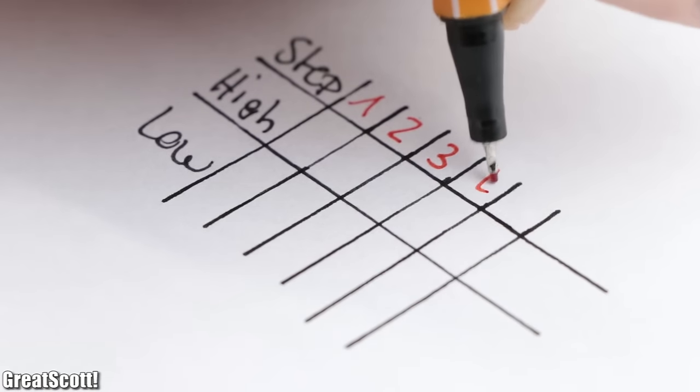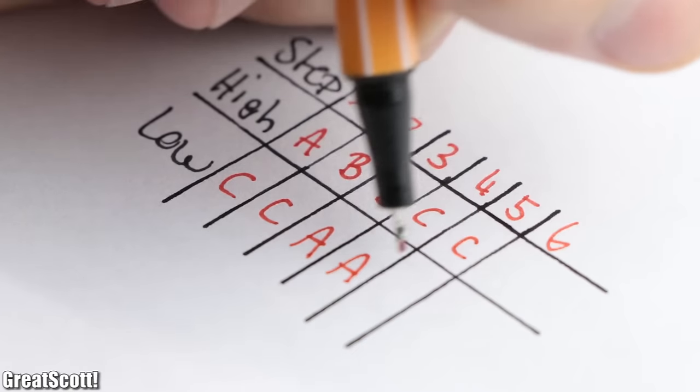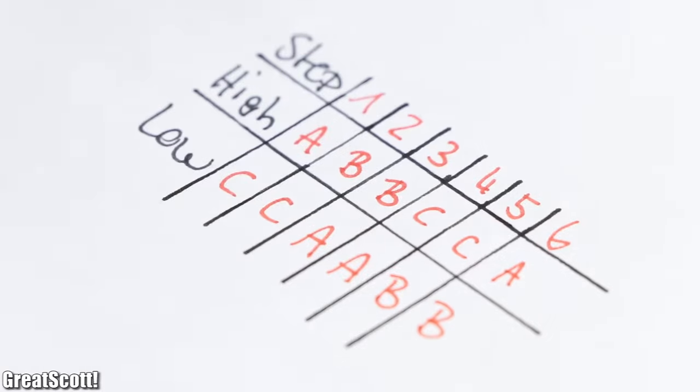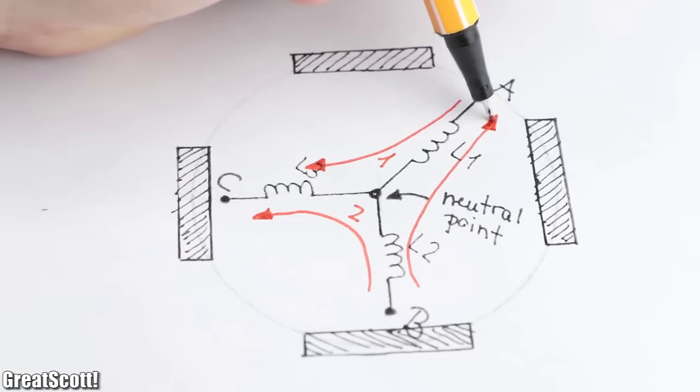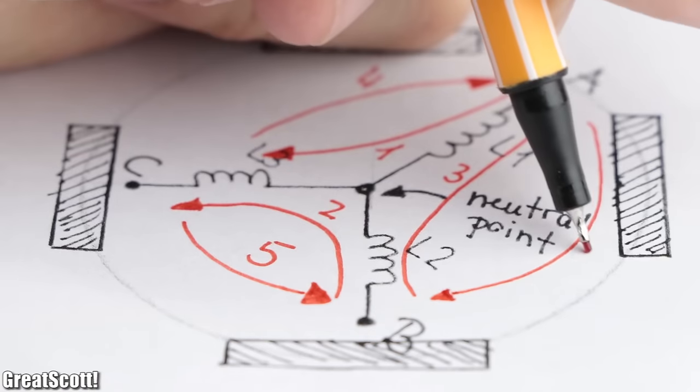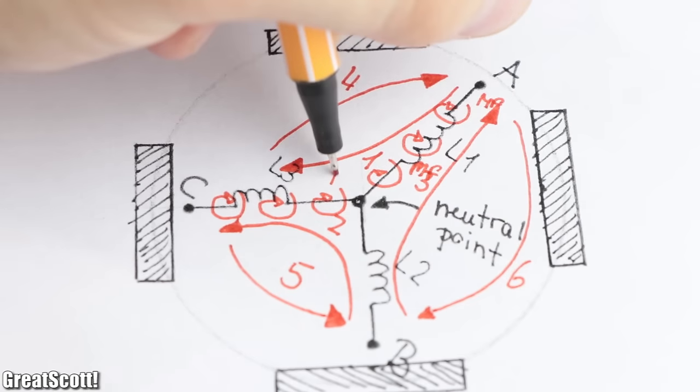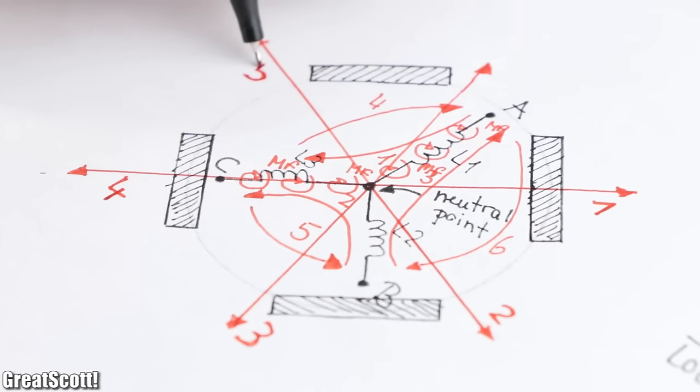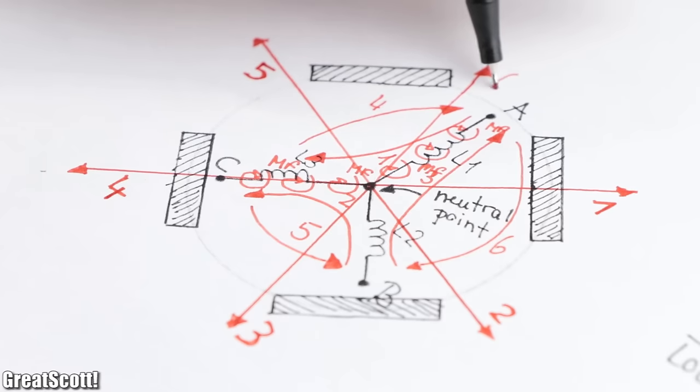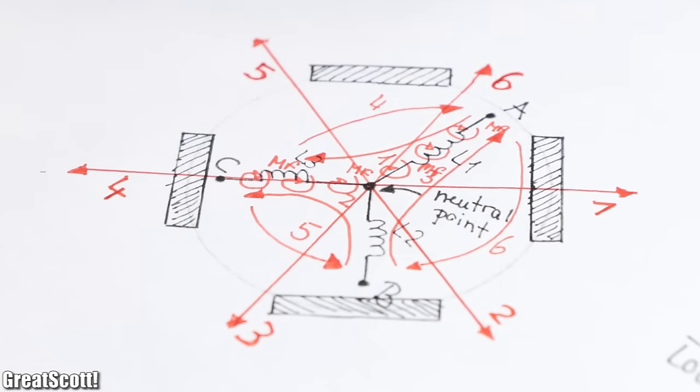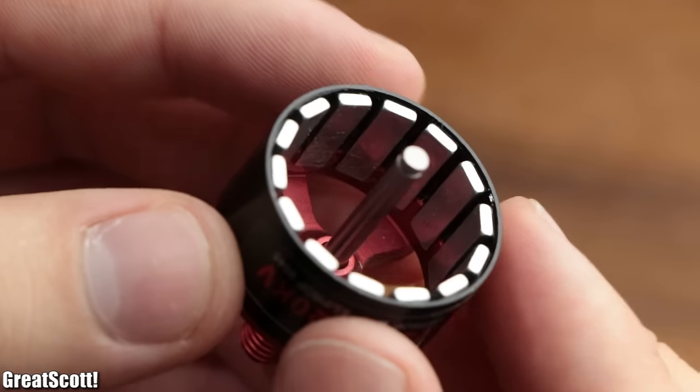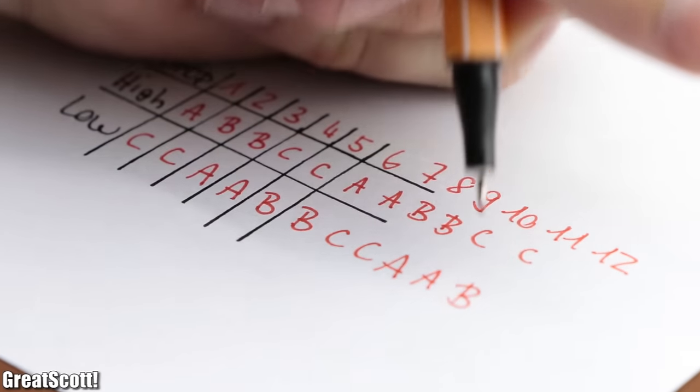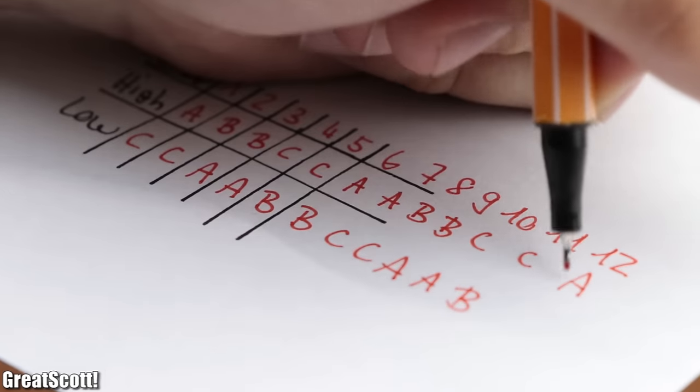So what the ESC basically does is going through six steps in which one of the three phases is connected to the supply voltage and one to ground. That means that in each step, current flows through two coils, each time with a different direction, which thus creates a changing magnetic field which attracts the magnets of the rotor and therefore creates a complete 360 degree rotation of the magnets in those six steps. But if you have more magnets like we do, it will take a multiple of the six steps. But they will still stay the same, they will only repeat themselves a couple of times.